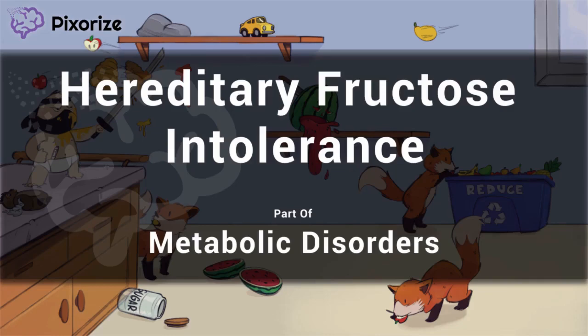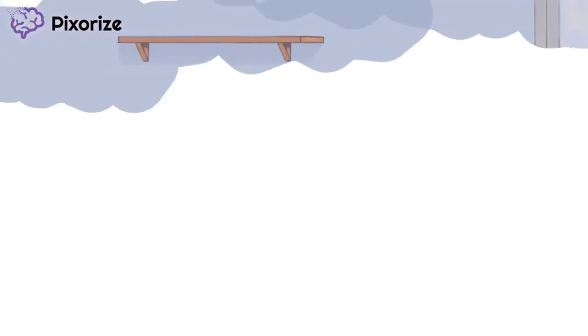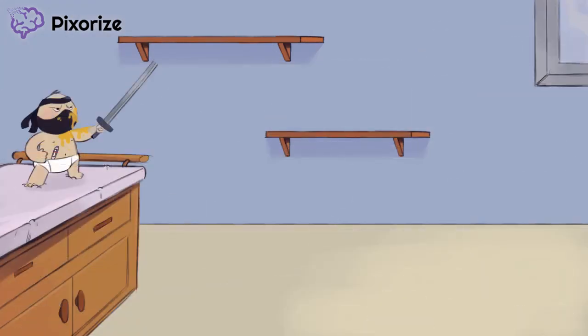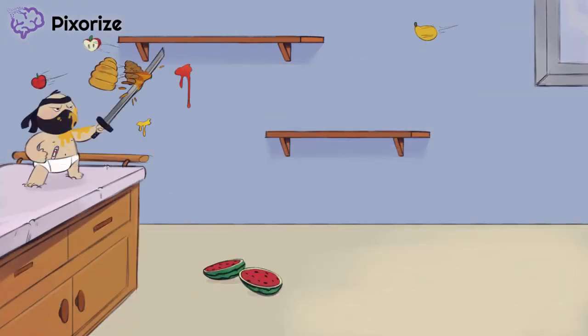Welcome to Pixerize's scene for hereditary fructose intolerance, part of our playlist on metabolic disorders. Hereditary fructose intolerance is a disease defined by an inability to properly metabolize fructose, the primary carbohydrate in fruit. Therefore, our scene is set in the bedroom of the fruit ninja, whose mortal enemy is fruit and the fructose contained within it. We might not have a ton of time before our fruit ninja's parents confiscate his weaponry and clean up his mess, so let's not waste a moment.